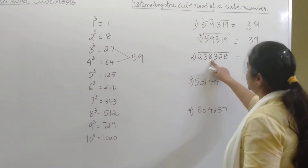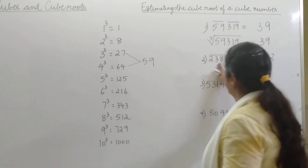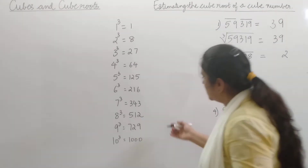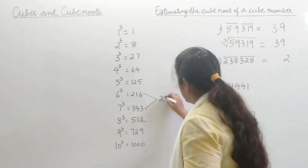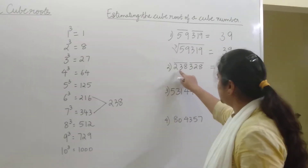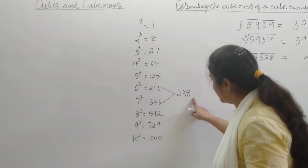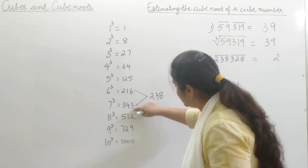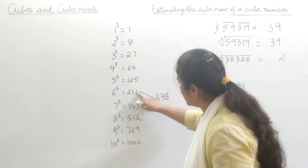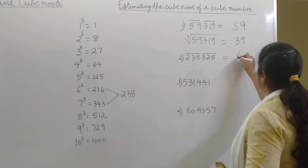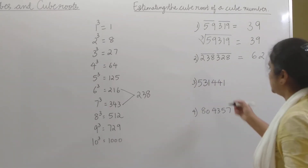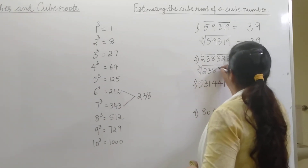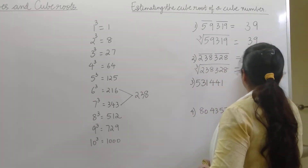Now take the second group 238. We need to find the two cube numbers between which 238 lies. 238 lies between 216 and 343. The smaller of these two numbers is 216, and the number against it is 6. So 6 is the tens digit of the cube root. The cube root of 2,38,328 is 62.